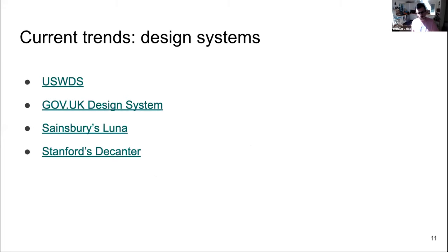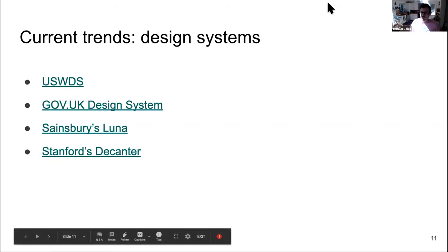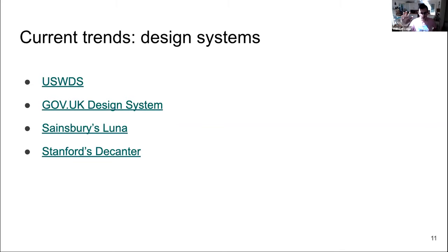One more thing I want to mention is the current design systems trend. This idea that people are no longer just aiming for a one-off artifact, but this is completely changing the workflow of how we deliver products — not just websites — at an organization's scale, keeping visual identity consistent and making their whole web presence accessible. Examples include one from the US federal government, one from the UK central government, the supermarket I go to also has a design system, and Stanford University in the US has one worth checking out. This is all public, which is also really cool.